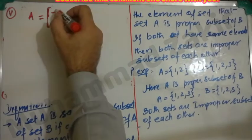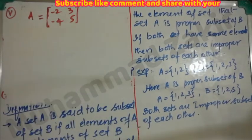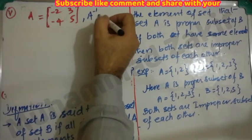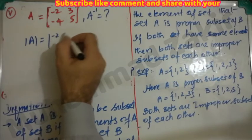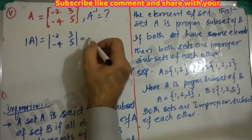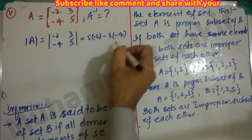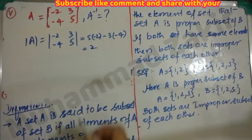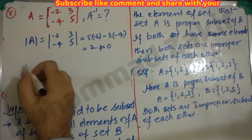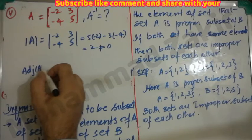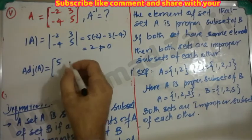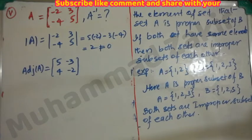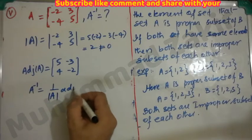Next: find the inverse of matrix A = [[-2, 3], [-4, 5]]. We first find the determinant: product of main diagonal minus product of secondary diagonal = (-2)(5) - (3)(-4) = -10 + 12 = 2. Since the determinant is nonzero, the inverse exists.